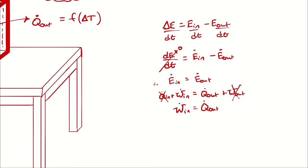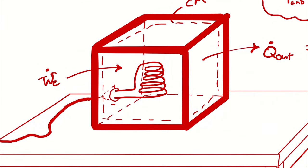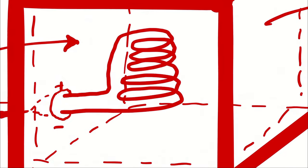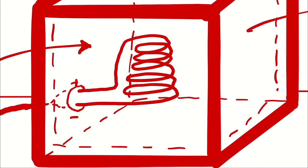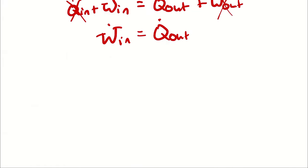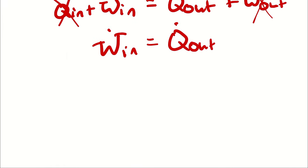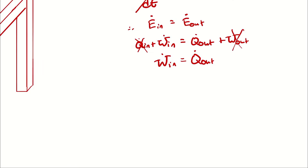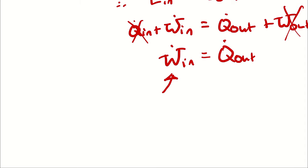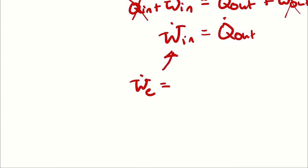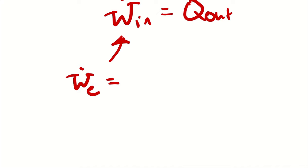I'll also point out that depending on how you define your system, you could call this a heat transfer in as well. If you wrapped your system around the heating coil, it's actually being converted from work to heat transfer before it enters your system, so it would enter as heat transfer. But whether you call it Q-dot-in or work-dot-in doesn't actually matter — the important part is that the energy entering is then leaving. For our purposes, the rate of electrical work is voltage times current, since we are treating all of it as turning into heat transfer.